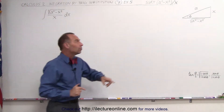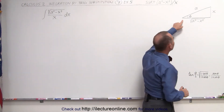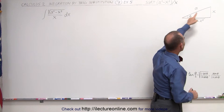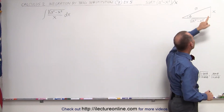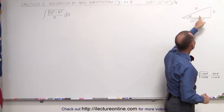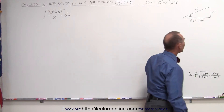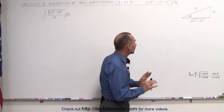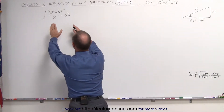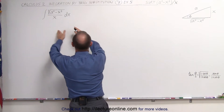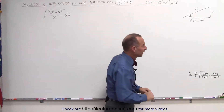We still use the same trigonometric identity. We have the triangle here, with the opposite side x, the hypotenuse a, and the adjacent side to the angle — the square root of a squared minus x squared. We use that relationship to make a substitution to rewrite x in terms of the sine, the cosine, and theta.